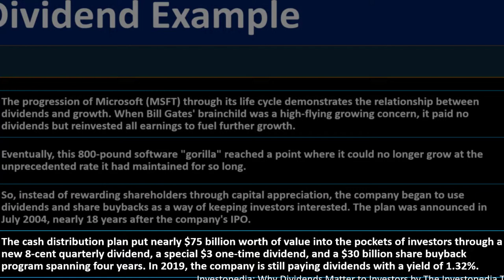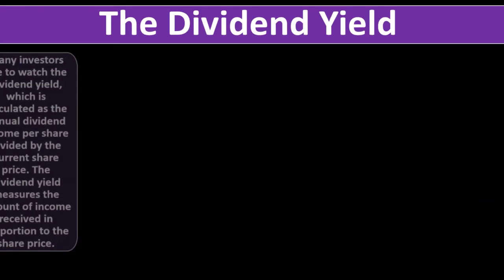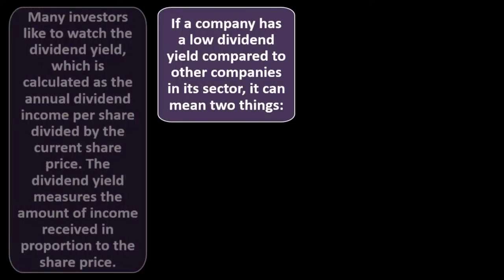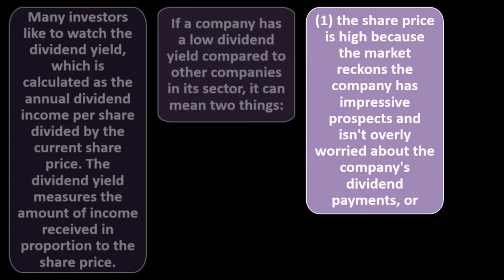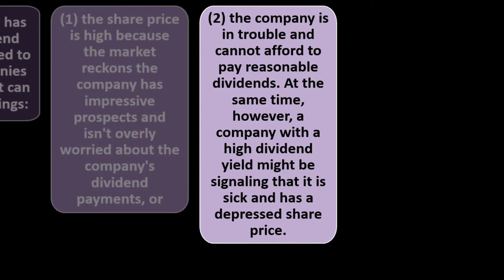Many investors like to watch the dividend yield, which is calculated as the annual dividend income per share divided by the current share price. The dividend yield measures the amount of income received in proportion to the share price. If a company has a low dividend yield compared to other companies in its sector, it can mean two things: either the share price is high because the market sees impressive prospects, or the company is in trouble and cannot afford to pay reasonable dividends.